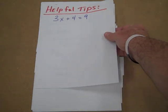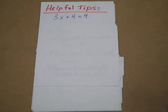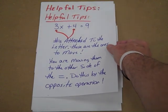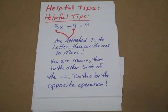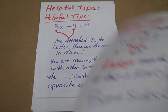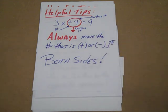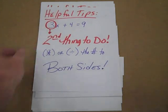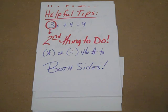Looking at some example helpful tips: here's our equation. We want to look at what's attached — the numbers are attached to the letter, and those are the ones we're going to move to the other side. You do this by the opposite operation. In this case we have a two-step equation. You're going to do the first step of getting rid of the 4, which is going to be by the opposite of a positive, so it's going to be negative. Our second step is going to be getting rid of the 3, which is attached by multiplication, which we're going to divide on both sides.